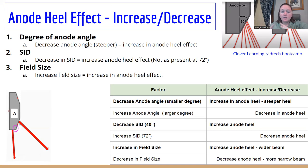And then field size, the larger the field size, the larger the anode heel effect, think wider beam, wider light field, more is going to get stolen from that anode.